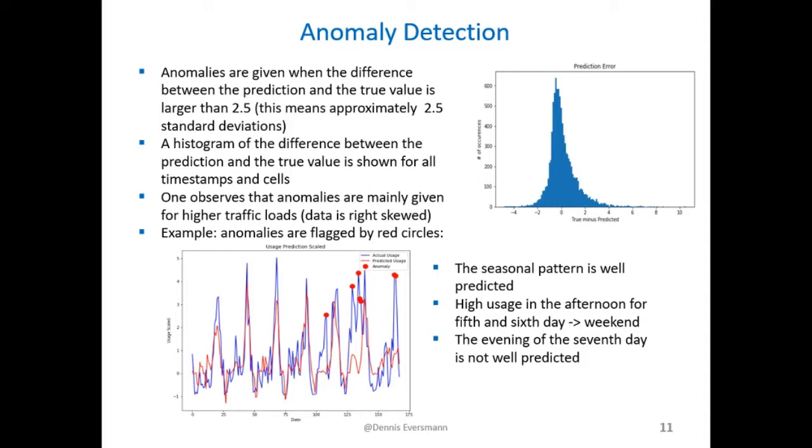Therefore, I calculate the difference between the predicted value and the true value. A histogram of all time series and all cells is given on the right-hand side of this slide. One can observe that the distribution is a little skewed to the right-hand side, meaning that more values are underestimated than overestimated by the prediction.